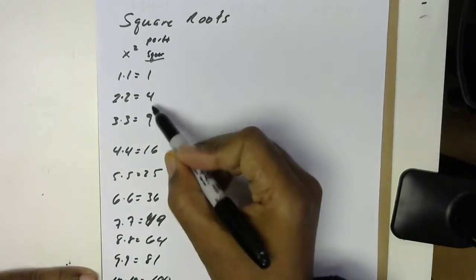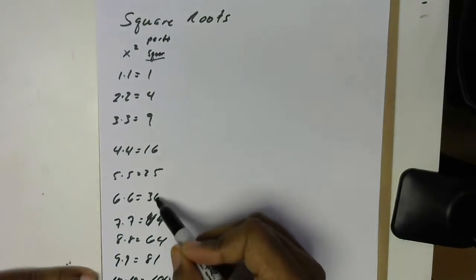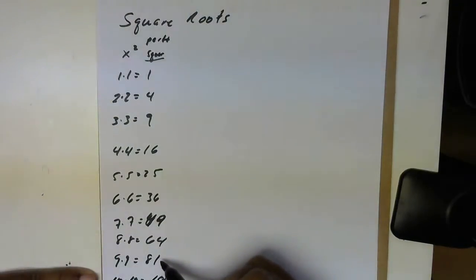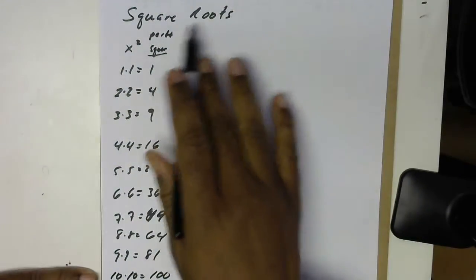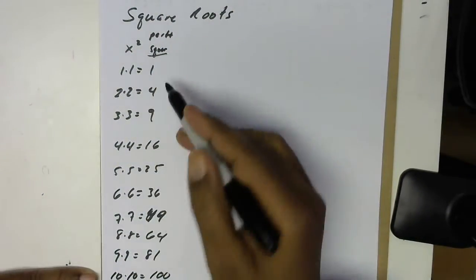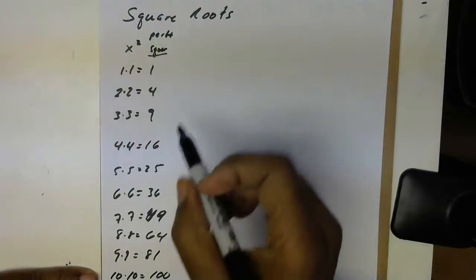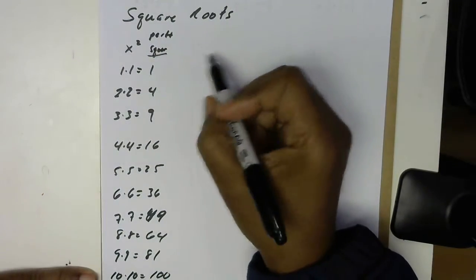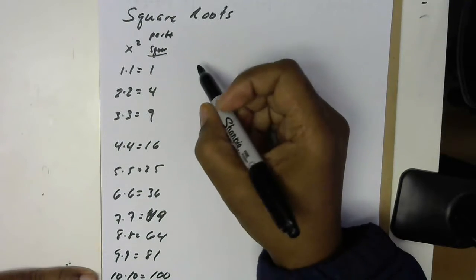The 1, the 4, the 9, the 16, the 25, the 36, the 49, the 64, the 81, and the 100. Square roots only work on perfect squares. So let's use some square roots on just the perfect squares.